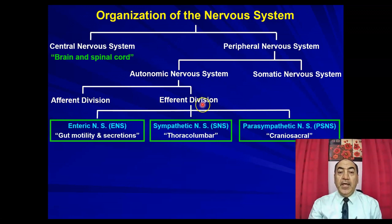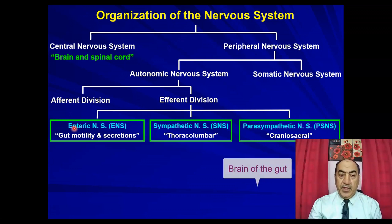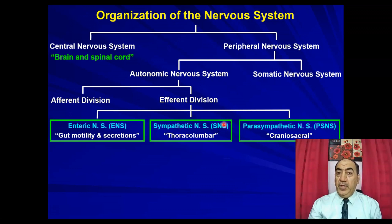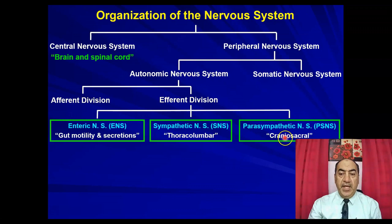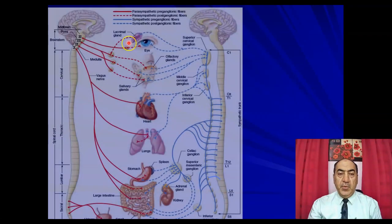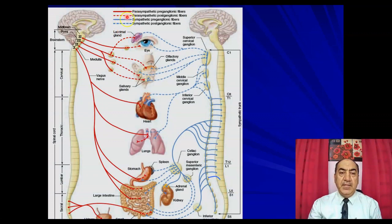The efferent division is further subdivided into the enteric nervous system, which deals with motility and secretions of the GIT and its microcirculation — it's called the 'brain of the gut.' Then there is the sympathetic nervous system, which is thoracolumbar, and the parasympathetic nervous system, which is derived from craniosacral sources — cranial nerves 3, 7, 9, and 10, and the middle three sacral segments.